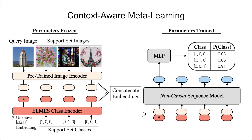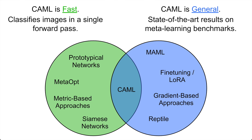The key idea underpinning our approach is to formulate visual meta-learning as non-causal sequence modeling — considering the entire context of support set images and the query image together to identify the axes of variability, specifically the visual characteristics that are most different, to classify the query.